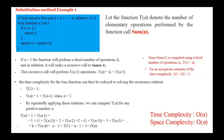Here is an example. We have the function for finding the sum of n integers. Since sum(1) is computed using a fixed number of operations, k1, then T(1) equals k1. However, if n is greater than 1, the function will perform a fixed number of operations, k2, and in addition it will make a recursive call to sum(n-1). This recursive call will perform T(n-1) operations. So in general, we have the formula T(n) equals k2 plus T(n-1).